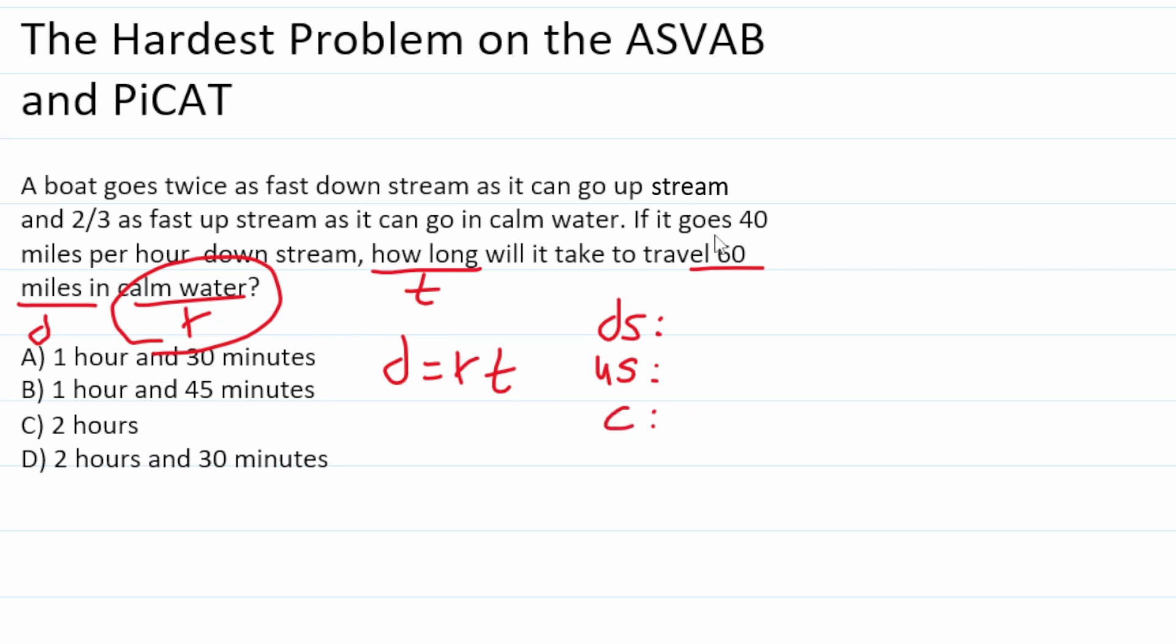More specifically, right here we're told that it goes 40 miles per hour downstream. In addition, we're told right here that it goes twice as fast downstream as it can go upstream. In other words, this 40 miles per hour is twice as fast as it goes upstream, while 20 miles per hour times 2 is 40.